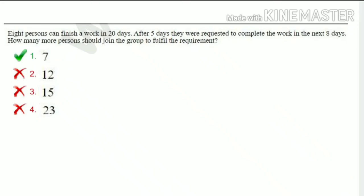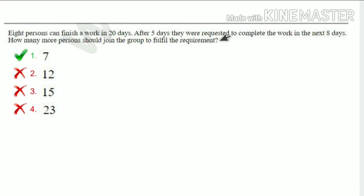Welcome to Chandru Maas YouTube channel. In this chapter, we will talk about SSE CGL and CPO — one question that is very easy. We will cover the maximum questions. First problem: 8 persons can finish a work in 20 days. After 5 days, they were requested to complete the work in the next 8 days. How many more persons should join the group to fulfill the requirement?